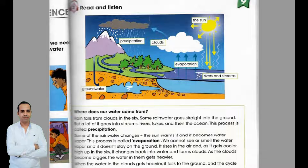As the clouds become bigger, the water in them gets heavier. When the water in the clouds gets heavier, it falls to the ground, and the cycle starts again.